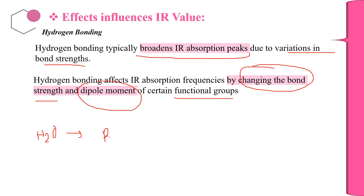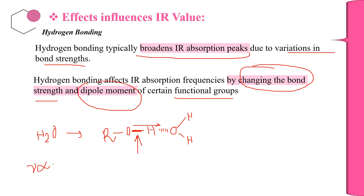Not only H₂O — consider the alcohol molecule R-OH. If it is present in a water medium, the hydrogen of the alcohol actually forms hydrogen bonding with the water molecule. Due to this hydrogen bonding, this particular bond gets elongated. Because the bond is elongated, the force constant of that bond decreases, and since wavenumber ν̄ is directly proportional to the force constant, the ν̄ value also decreases.